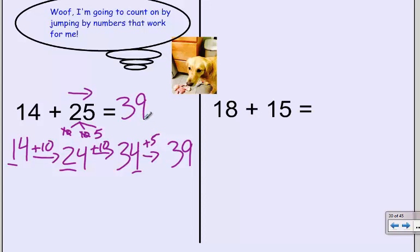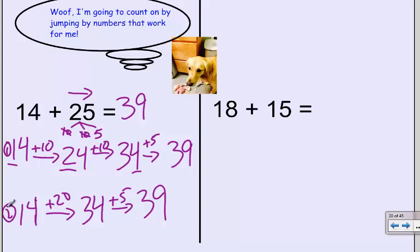Now if I'm quick and slick, I could have jumped 14 plus 20. Instead of jumping by two tens, I jump by them at once, which gets me to 34. And then I could jump by my plus five again, and that gets me to 39. So this is the good part about the arrow way. You can choose how many jumps work for you.